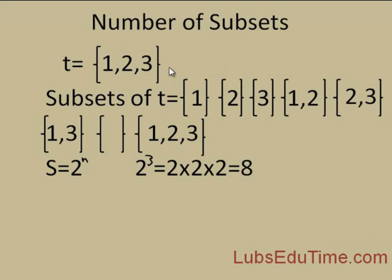Then together, {1, 2} is a subset — a parallel set. {2, 3} is another subset, and {1, 3} is another subset. You also have an empty set, and the empty set is a subset of all sets — always remember that. The set itself is also a subset of itself.